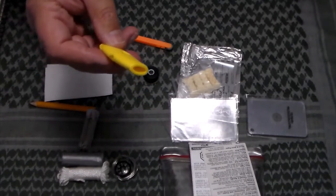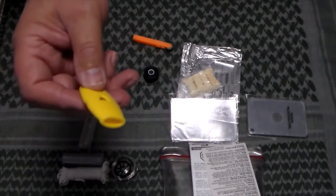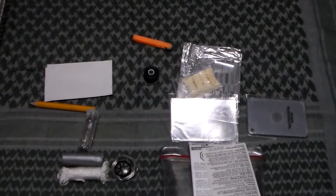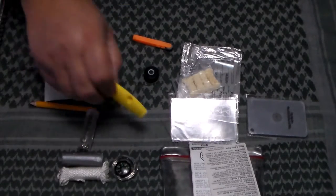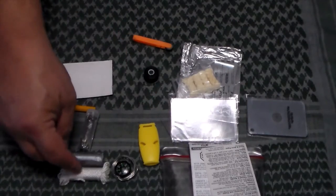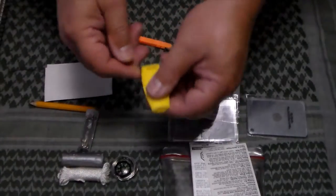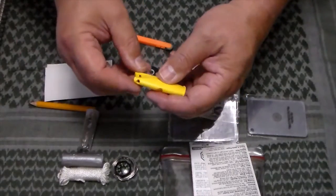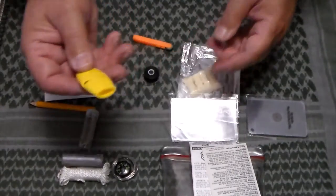And a whistle. You can blow a whistle a lot longer than you can holler. And it's a fairly decent whistle. So, and you can use some of the cordage to put it through the hole here and tie it around your neck. That way you don't lose it.